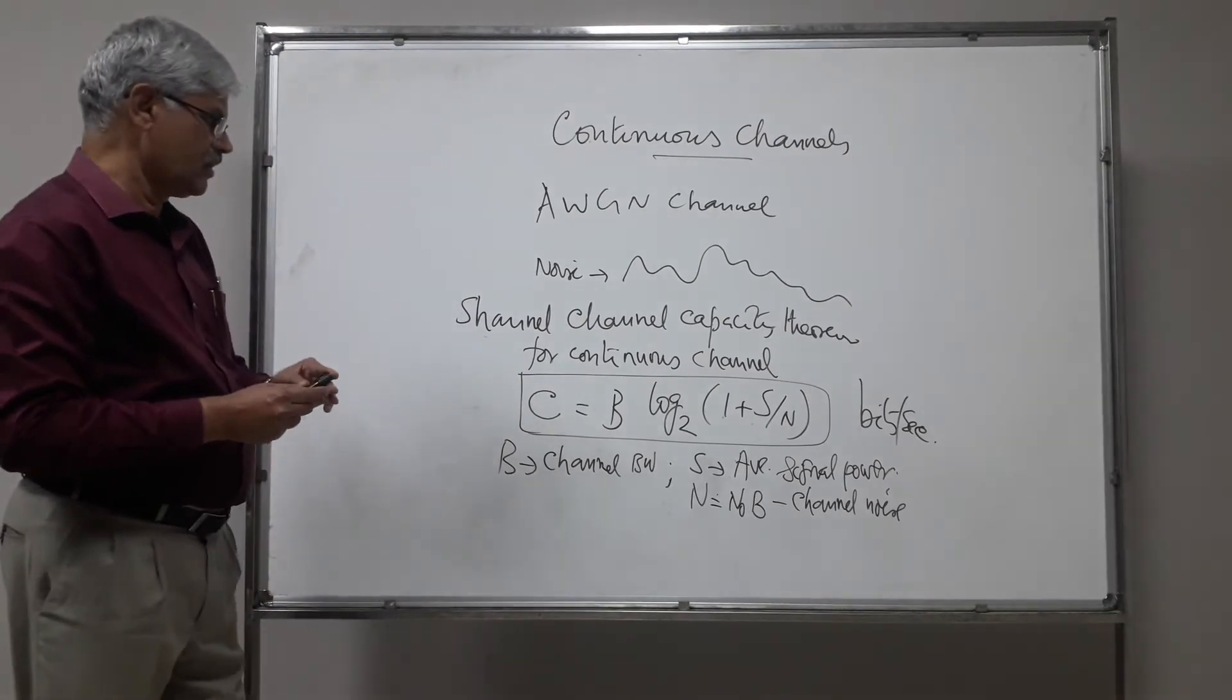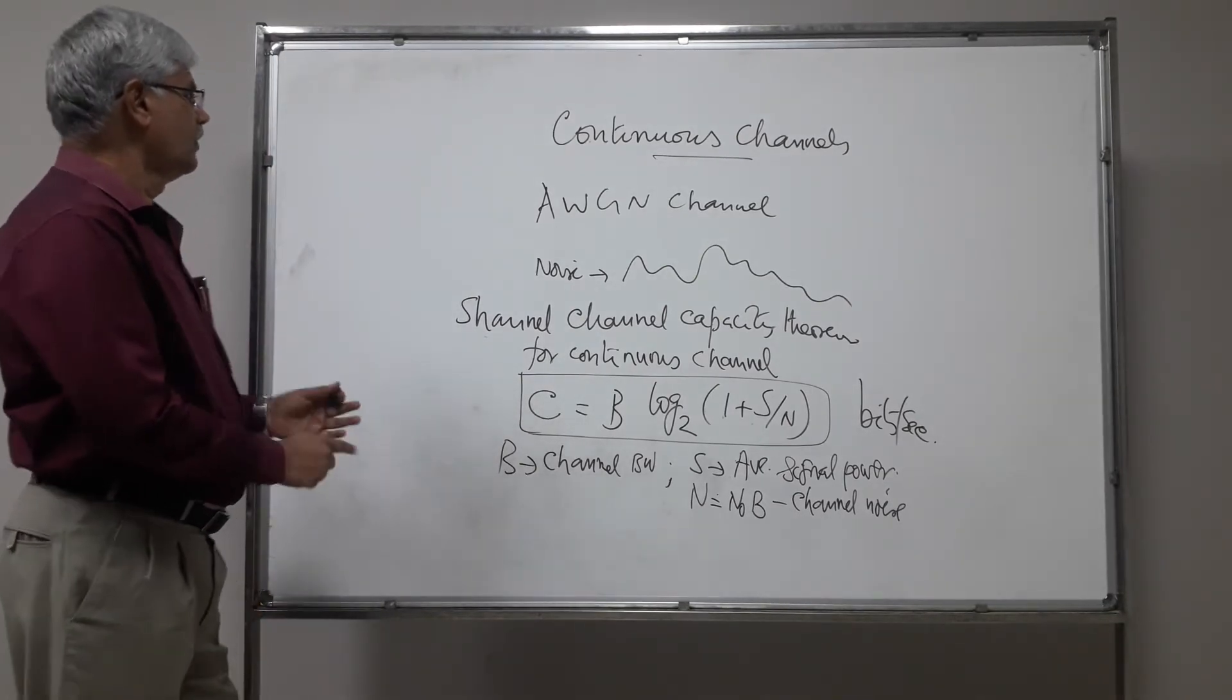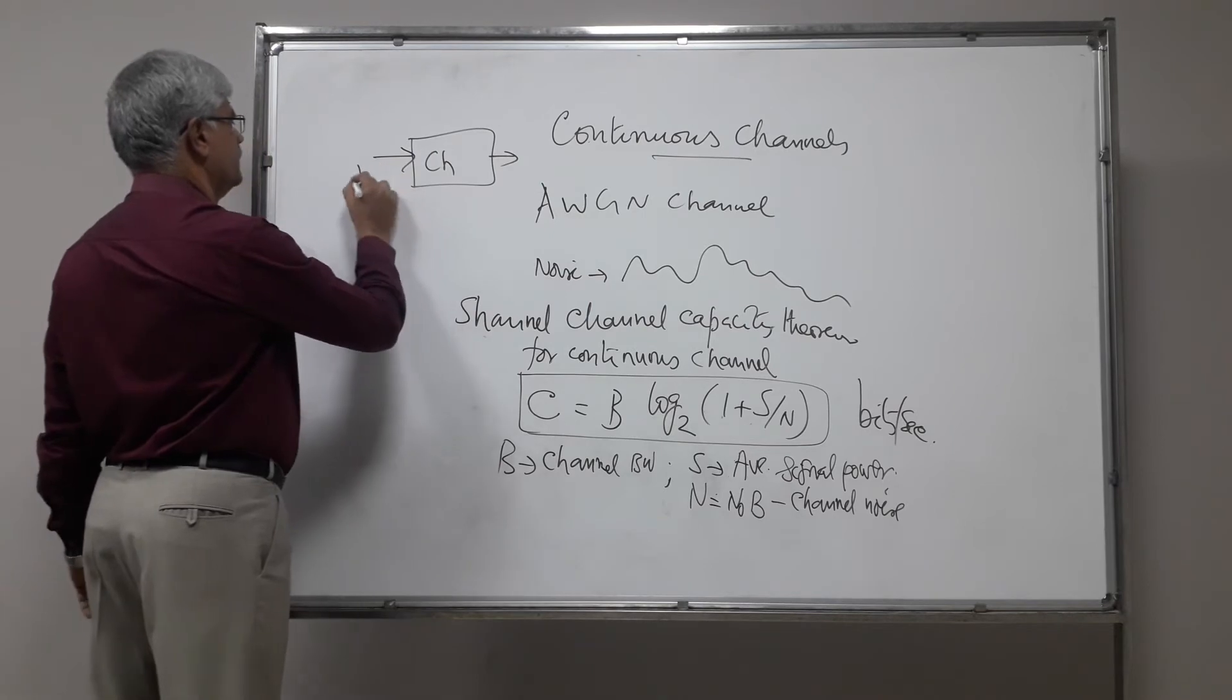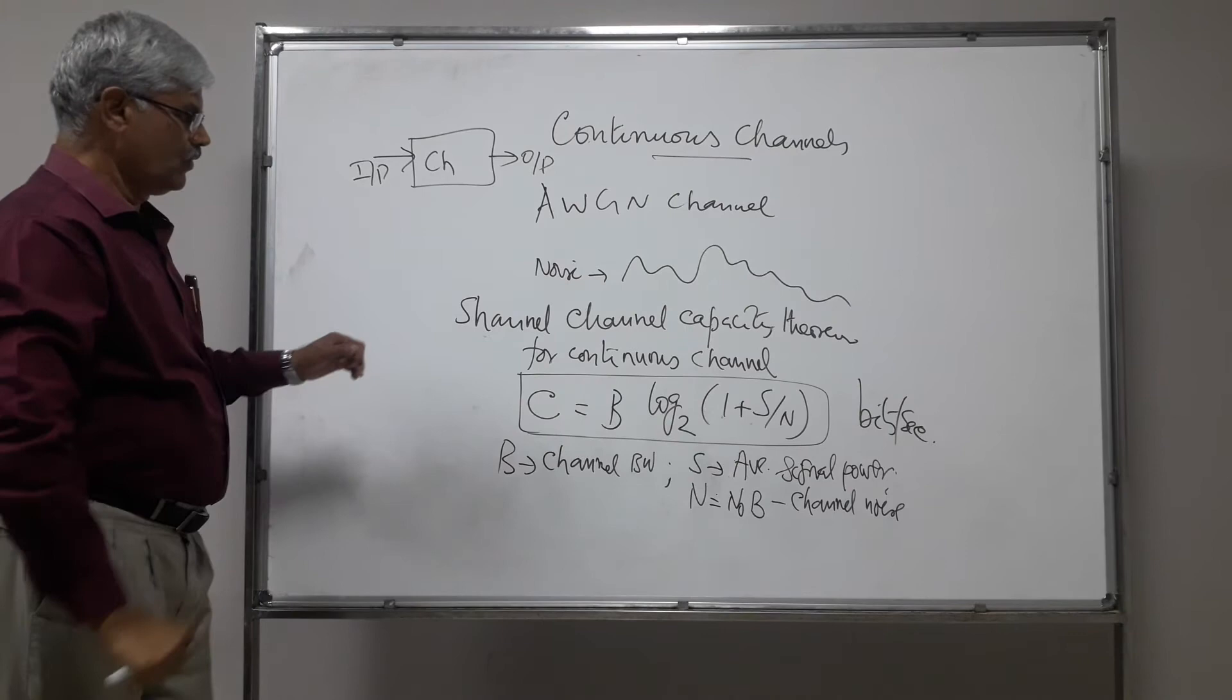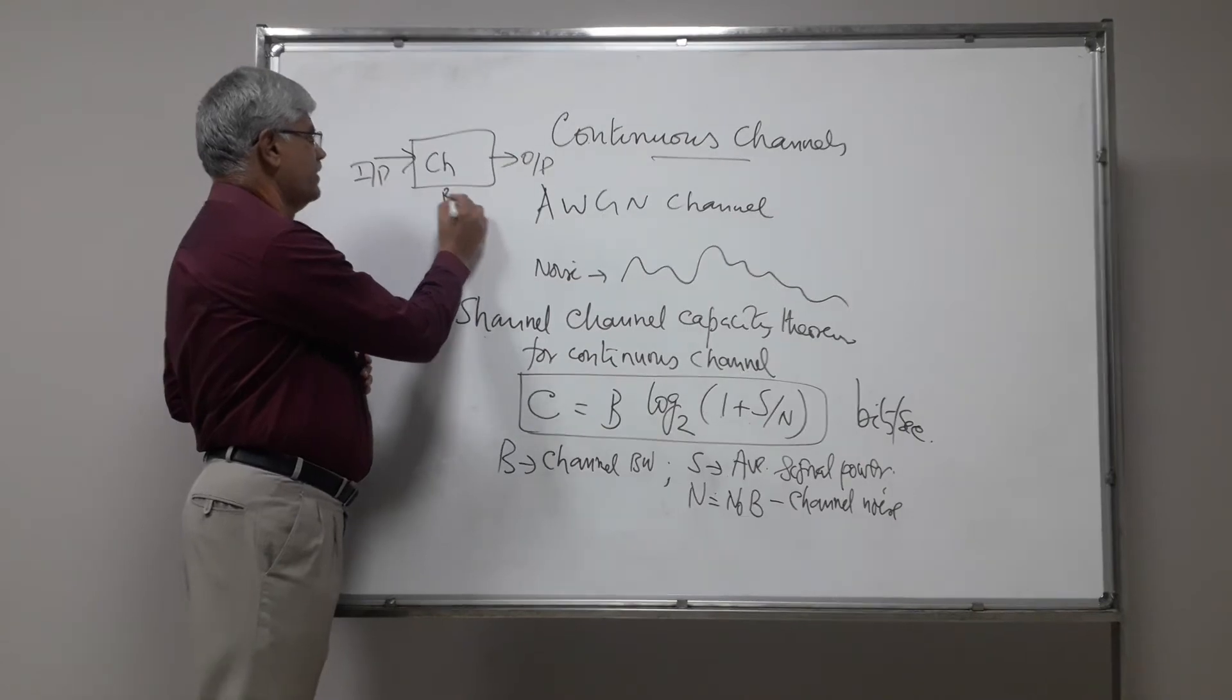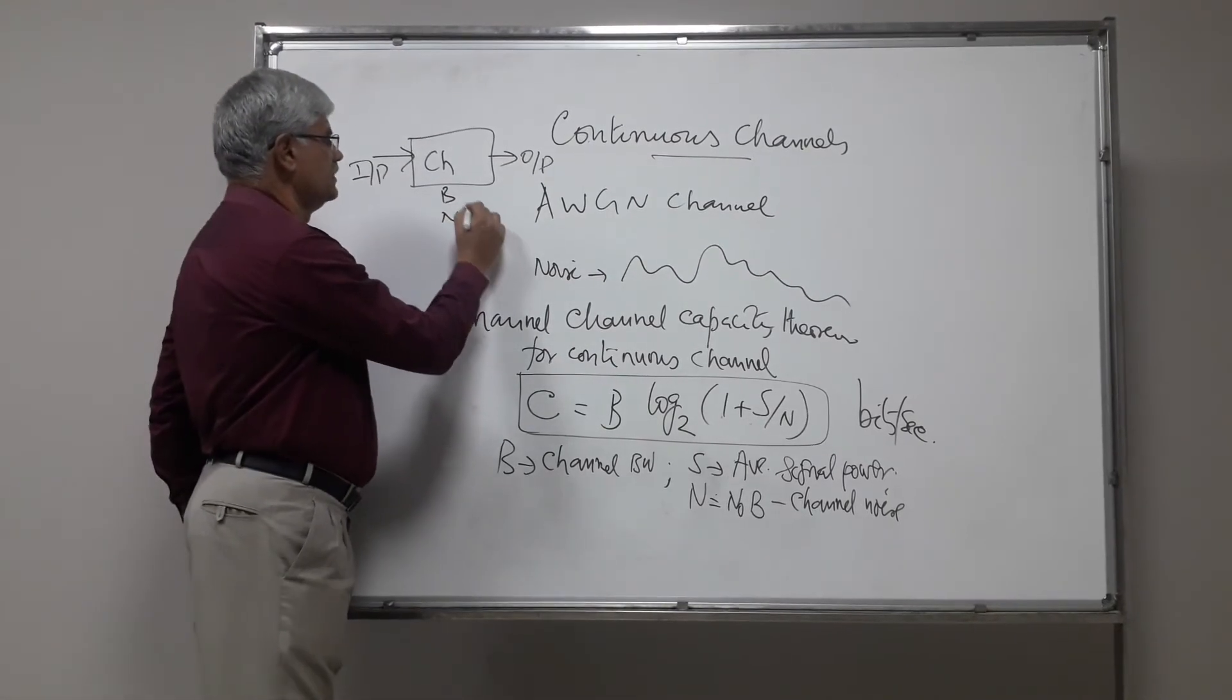Let us see what we are seeing. We always transmit the signal through a channel. This is the channel - we have input, we have the output. When the channel is characterized by bandwidth and noise, this is noise, this is bandwidth.